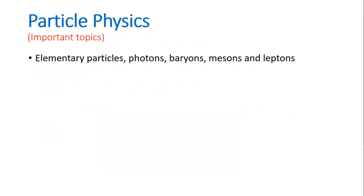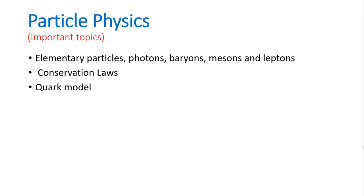First of all, these are some important topics of particle physics in which we have to study elementary particles: photons, bosons, mesons, and electrons. Some conservation laws we have to study — energy conservation law, momentum conservation law, isospin conservation, baryon conservation, charge conservation, and so on. We will study both exact and approximate conservation laws, and which type of conservation laws we usually apply to solve questions. Next is the quark model: discovery of quarks, types of quarks, how to solve reactions based on quarks, and at last, the decay of particles.